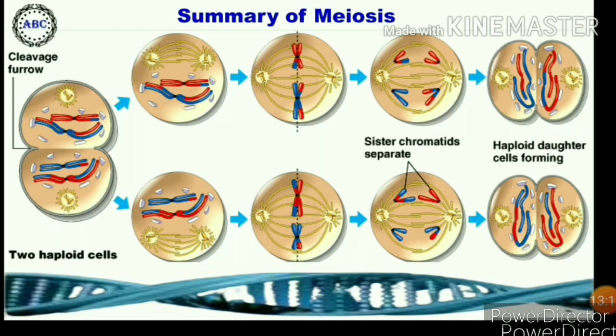This is the summary of meiosis second: two haploid cells formed by meiosis first pass through prophase second, metaphase second, anaphase second, and telophase second, and then cytokinesis takes place for the formation of four haploid nuclei at the end of meiosis.